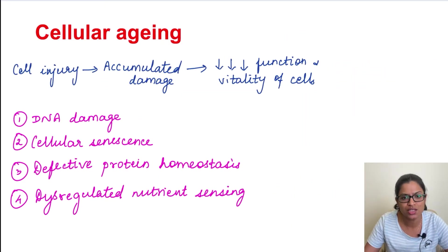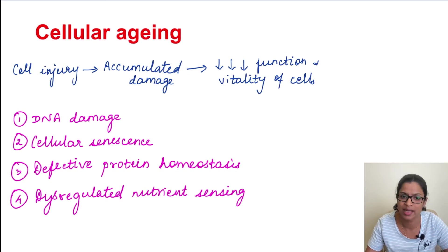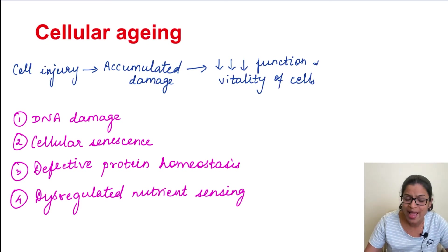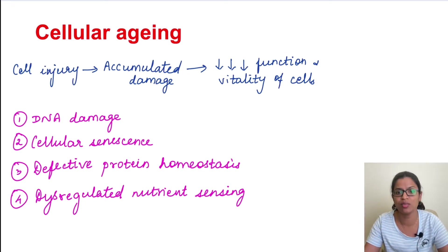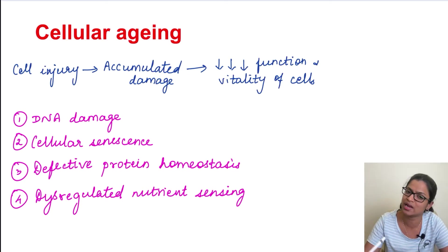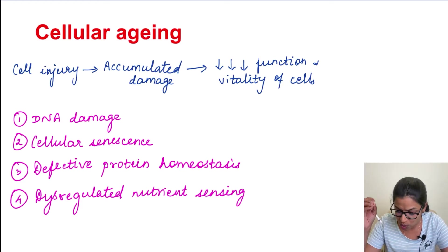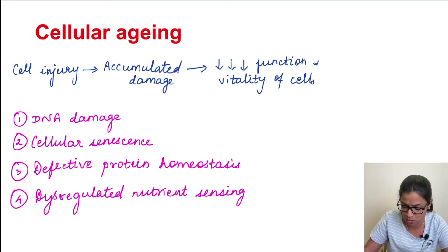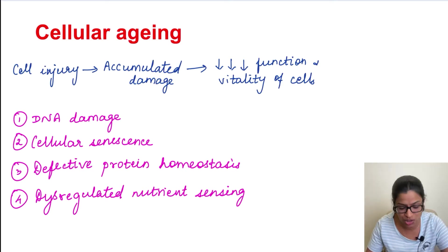So why do people age? Because their individual cells are undergoing aging — that is why a person is aging. Over the years, recurrent cell injury has accumulated damage, and that damage is going to cause a decrease in the functionality of the cell, which will ultimately lead to the death of the cell. So cells are getting lost. This decreased function and vitality of the cells is what is termed as cellular aging, and this is regulated by certain genes also.